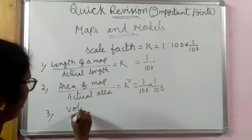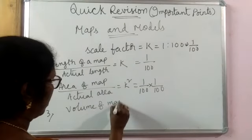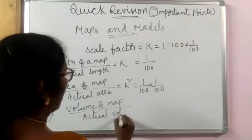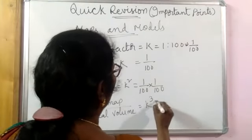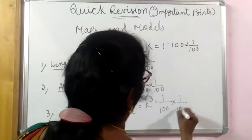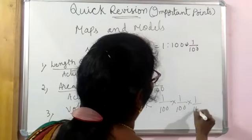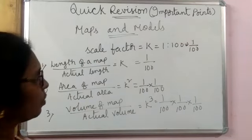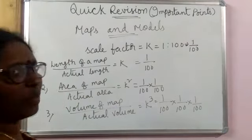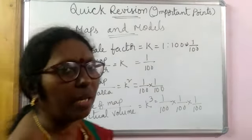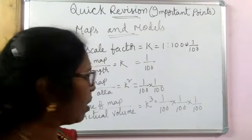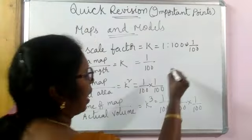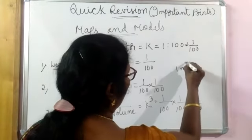Third one is volume of map by actual volume - K cube.